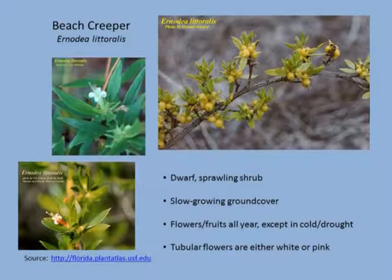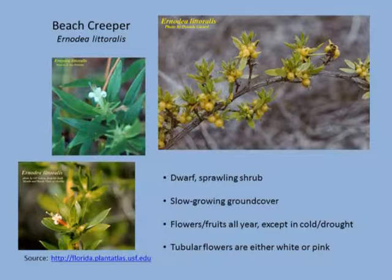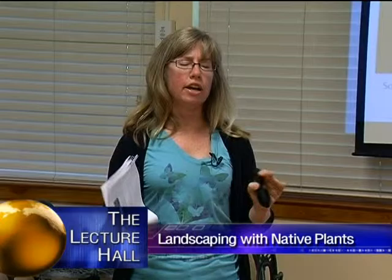Beach creeper is an interesting one. It's not conventionally beautiful like a beach dune sunflower — it has a woody look to it, a sprawling shrub with thick green leaves and tubular flowers that are sometimes pink, sometimes white. It bears yellow berries. You're not buying this plant for the flowers or the fruit — they're pretty inconspicuous. But as a spreading, sprawling ground cover that's drought tolerant and salt tolerant, it's a nice one.